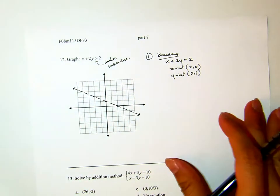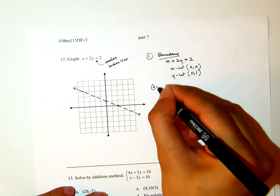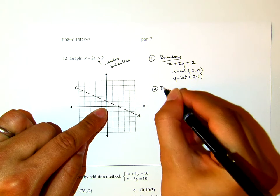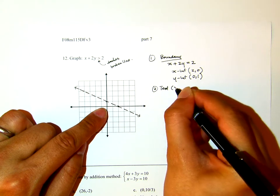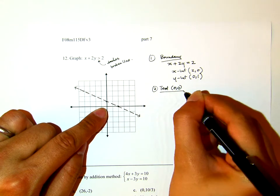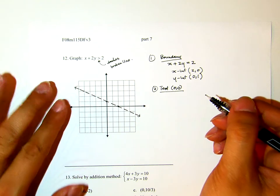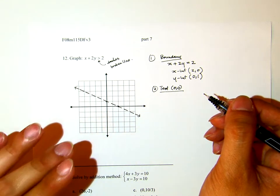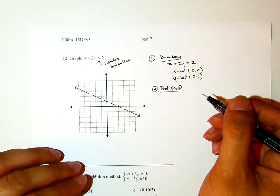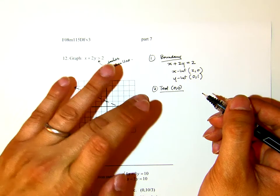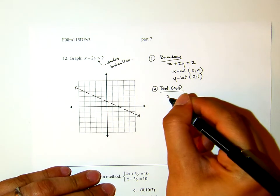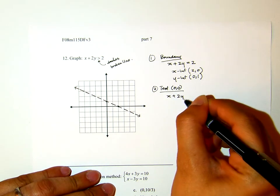Second thing I do, I will check 0,0. I will test 0,0. If 0,0 is a solution, then I will shade the region containing that 0,0. If 0,0 is not a solution, then I will shade the region not including that 0,0. If I plug in 0,0 into this inequality, let's see what happens.